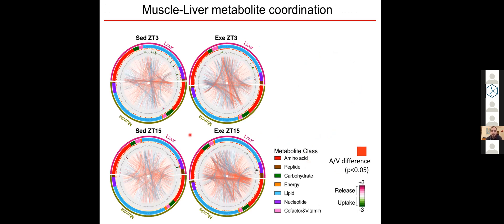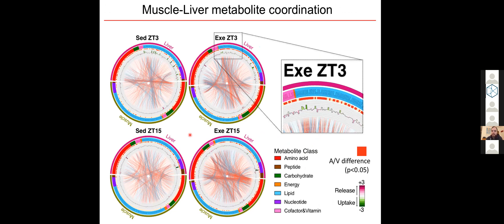For example, if we zoom in here, we can see at the single molecule level which specific lipids are taken up and released by the liver after exercise in the morning. And this allows us to identify which metabolites are produced by the liver at a given time point or a given condition that may be taken up by the muscle in the same condition and vice versa.